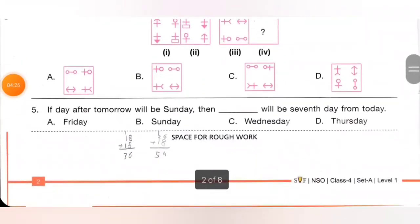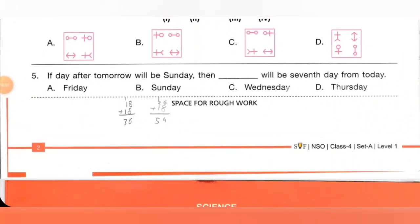Fifth one: if the day after tomorrow will be Sunday, then what will be the 7th day from today? Option A: Friday, B: Sunday, C: Wednesday, D: Thursday. Day after tomorrow = Sunday, so tomorrow = Saturday, and today = Friday. From today: Friday → Saturday → Sunday → Monday → Tuesday → Wednesday → Thursday → Friday. The 7th day from today is Friday. Option A is the correct answer.